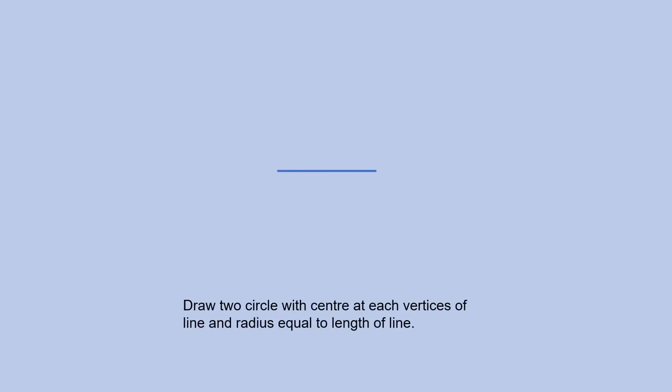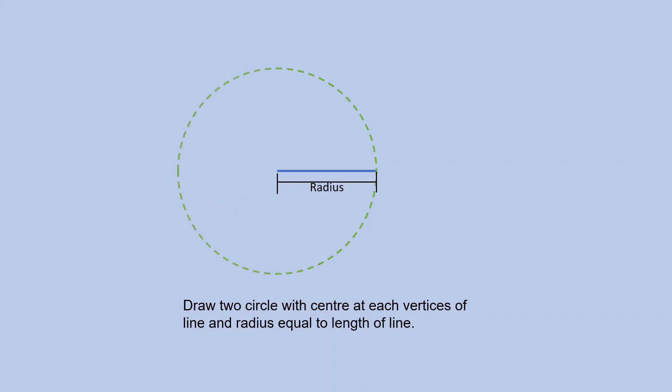Then draw circles with center at the vertices and radius same as the line. Draw another circle with center at the other vertex and with the same radius.